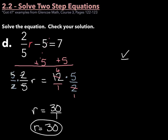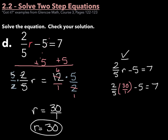Let's check our work by rewriting the original equation: two-fifths r minus 5 equals 7. Substitute our answer of 30 in for r — writing it as 30 over 1 since we're multiplying by a fraction — minus 5 equals 7. Cross-simplifying the 5 and the 30, divide both by 5 to get 1 and 6. So 2 times 6 is 12 over 1, which is just 12. 12 minus 5 should equal 7, and sure enough, 7 does equal 7. Left side equals right side, so r equals 30.